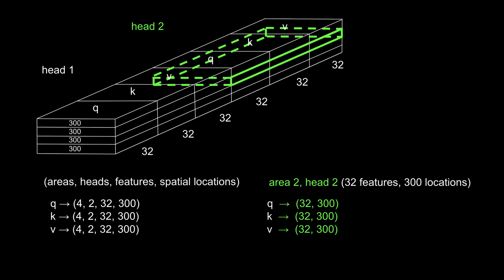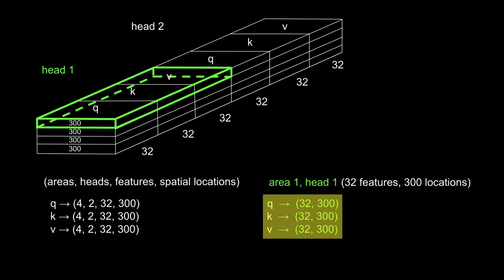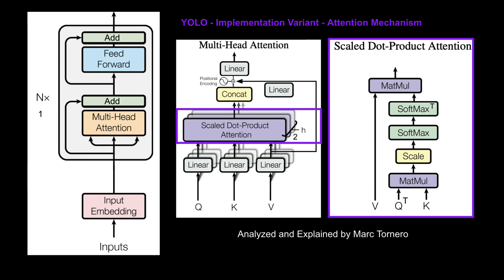So if we focus on any specific area and head, the query, key, and value tensors can be viewed as two-dimensional. We'll use these 2D representations to better visualize the operations performed during the attention process, and then we'll return to the full 4D tensor. Let's now use our queries, keys, and values to perform what's called scaled dot product attention. The steps are outlined to the right, let's walk through them.